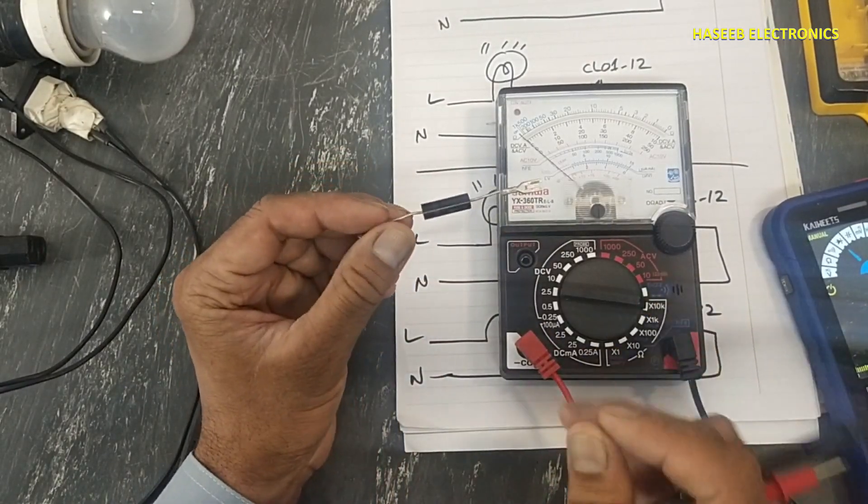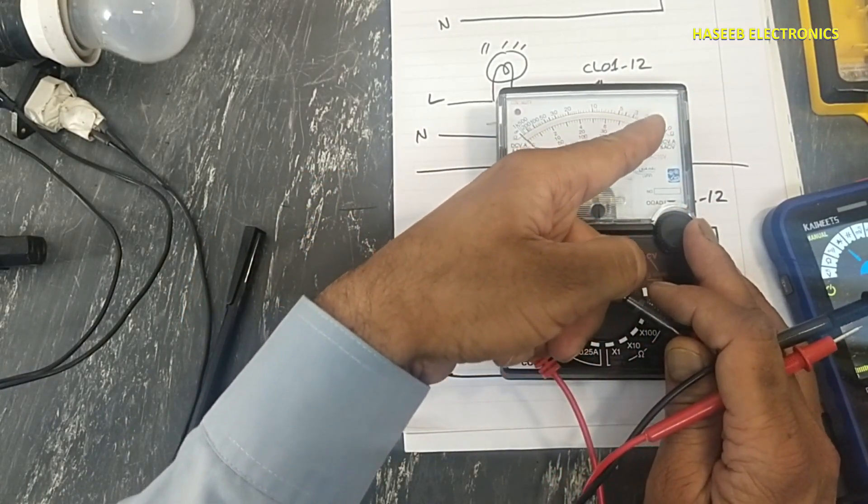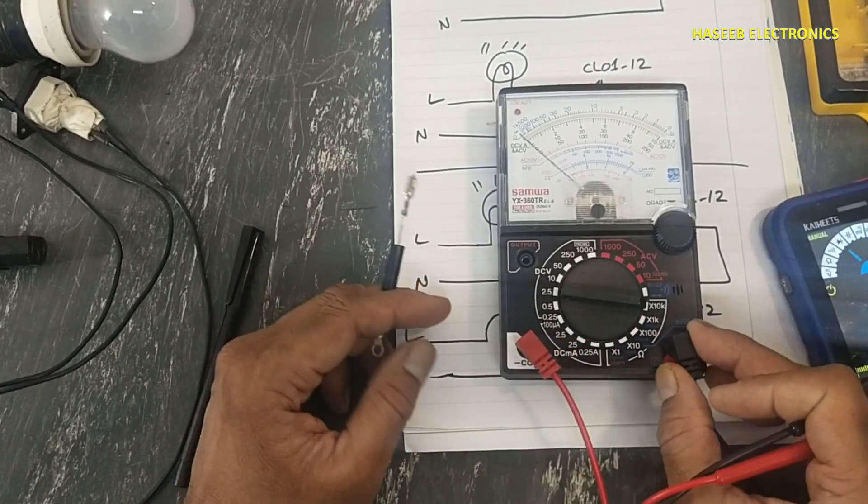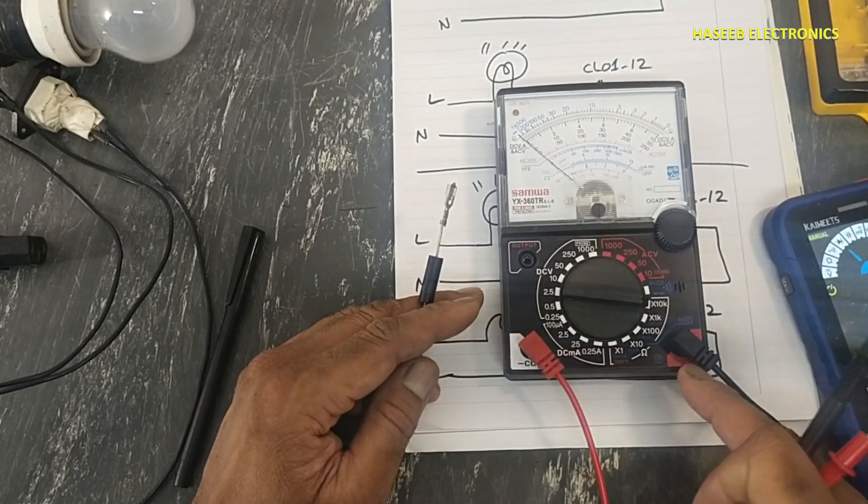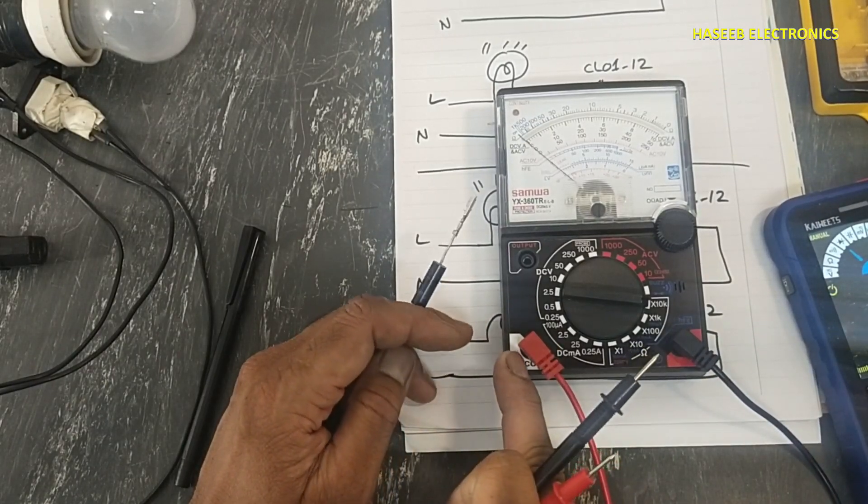We can also test this diode using analog multimeter. This analog multimeter uses two batteries, three volt, nine volt. Set multimeter to 10k range. Place black lead at positive terminal, red lead at common terminal.